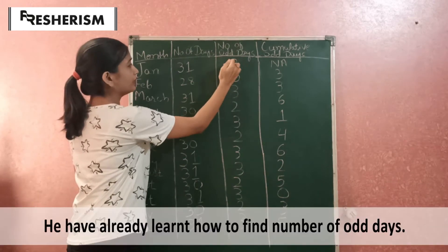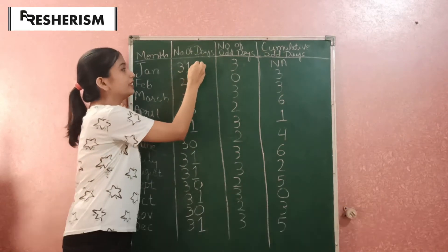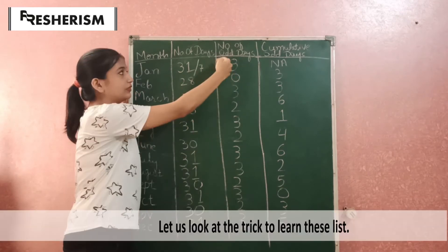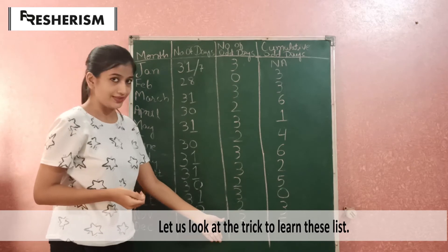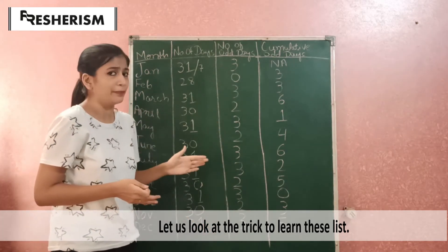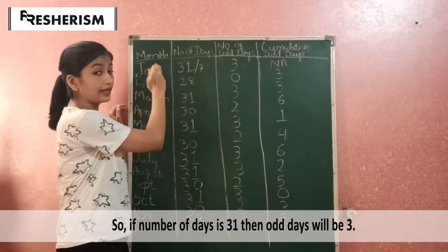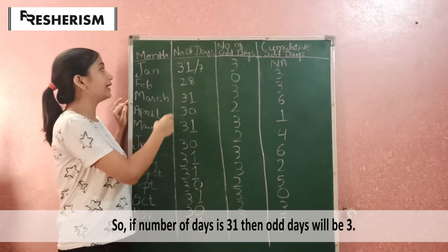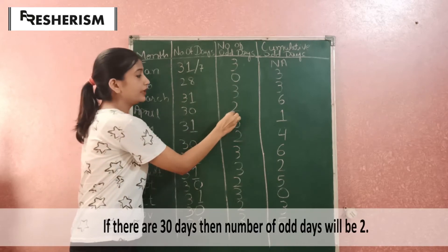To calculate the number of odd days, take 31 divided by 7 — the remainder will be 3, so 3 odd days. This gives us the list of odd days for every month. If there are 31 days in any month, the number of odd days will be 3. And if there are 30 days in any month, the number of odd days will be 2.